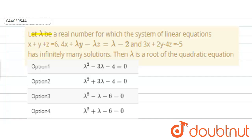The question is: let lambda be a real number for which the system of linear equations x plus y plus z equals 6, 4x plus lambda y minus lambda z equals lambda minus 2, and 3x plus 2y minus 4z equals minus 5, has infinitely many solutions. Then lambda is the root of which quadratic equation?